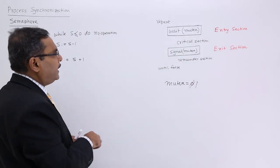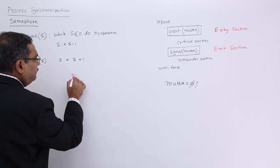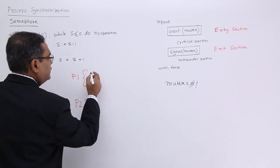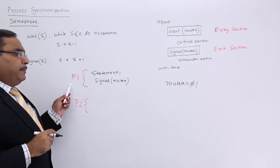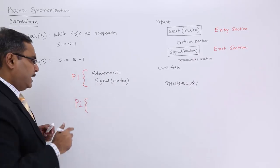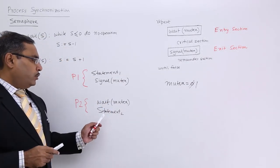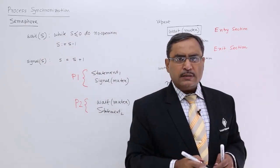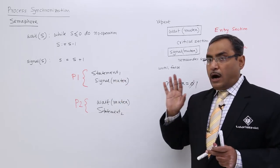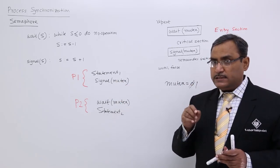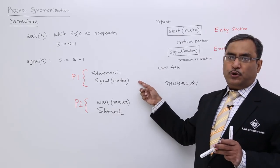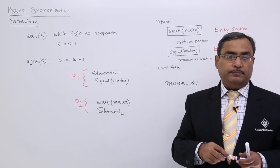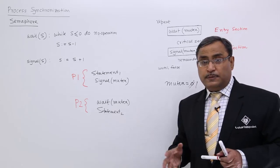Let us go for another small example. Suppose we have process P1 and process P2. P1 has a code with statement 1 followed by signal(mutex), and P2 has a code with wait(mutex) followed by statement 2. Mutex is a synchronization variable for mutual exclusion. I want P1 to execute first, then P2 — like P1 is the washing process and P2 is the drying process. But suppose P2 has arrived first.